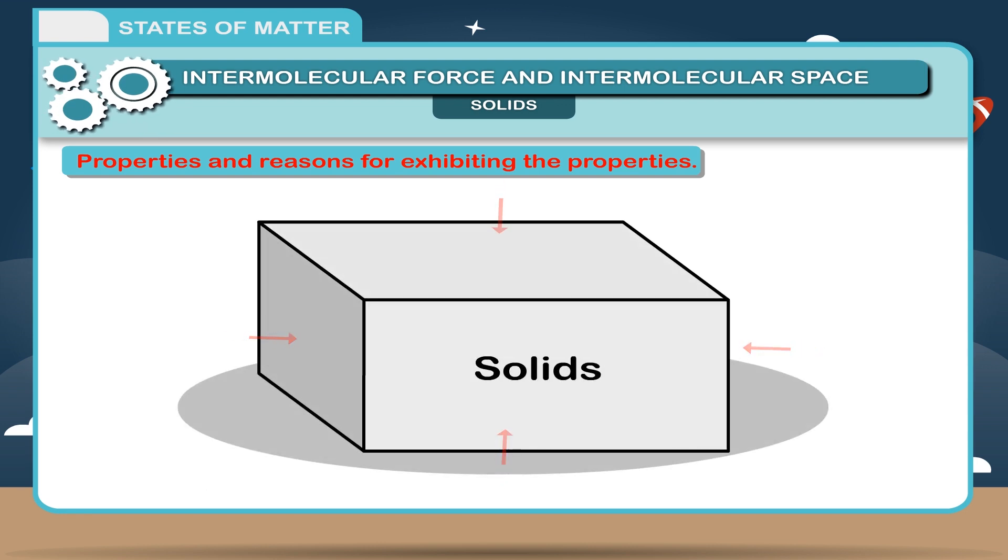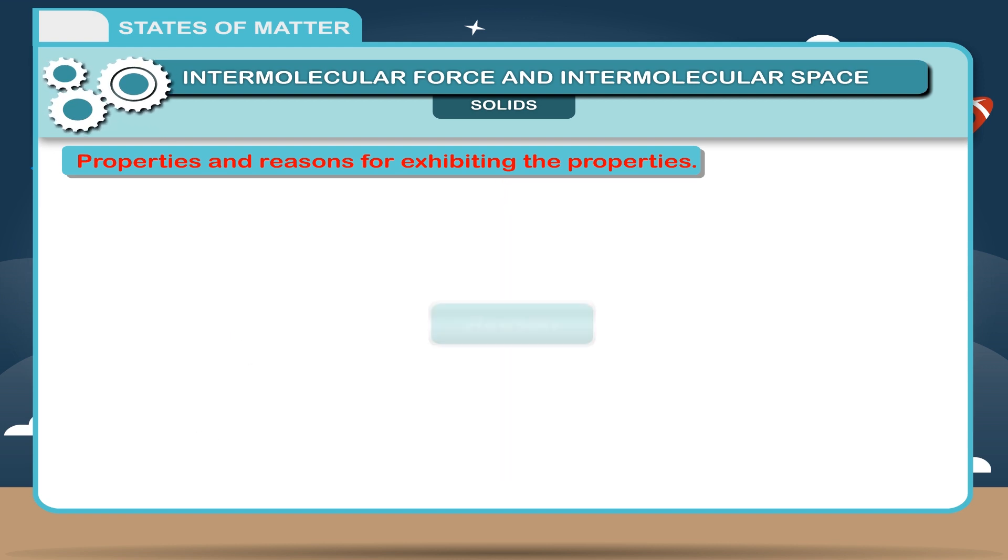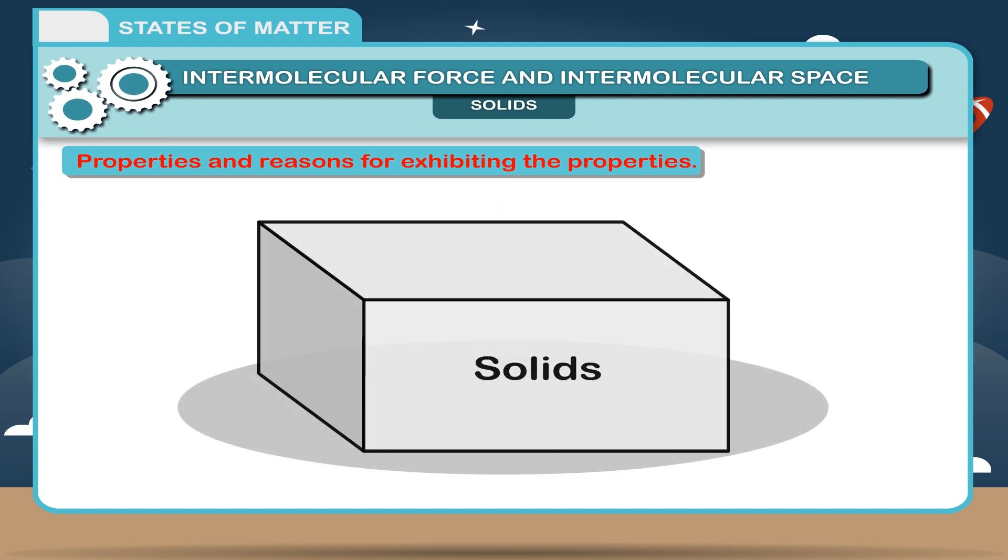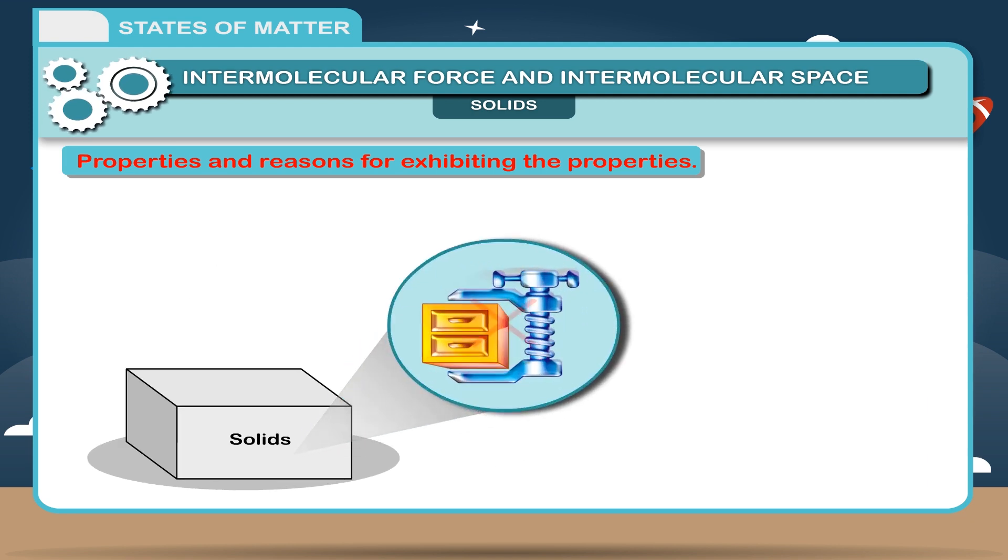Solids have any number of free surfaces depending on their shape. Reason: Solids are those substances which have a definite shape and volume. They are non-compressible, cannot flow, and therefore have any number of free surfaces.